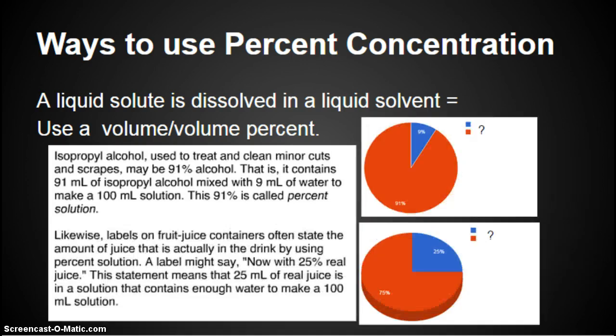Likewise, labels on fruit juice containers often state the amount of juice that is actually in the drink by using percent solution. A label might say, now with 25% real juice. This statement means that 25 milliliters of real juice is in a solution that contains enough water to make a total of 100 milliliters. So 25% is juice, 25 milliliters of juice, 75% or 75 milliliters of water. The whole thing adds up to 100% or 100 milliliters.